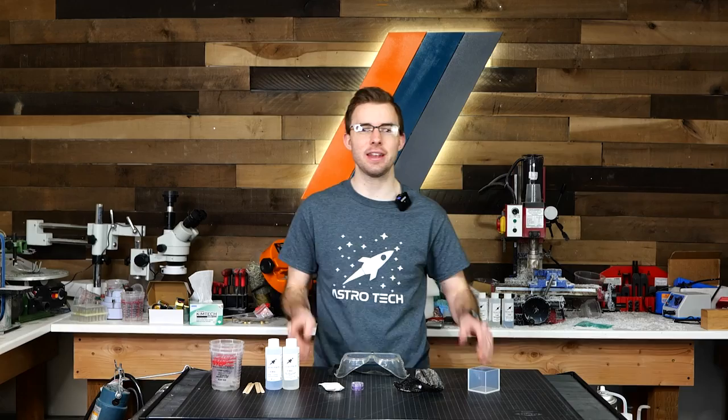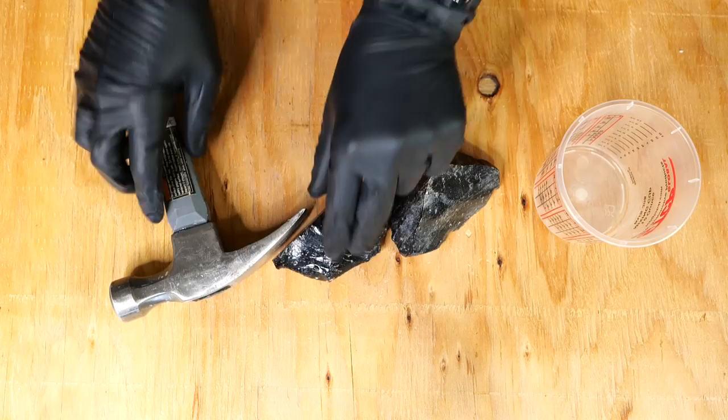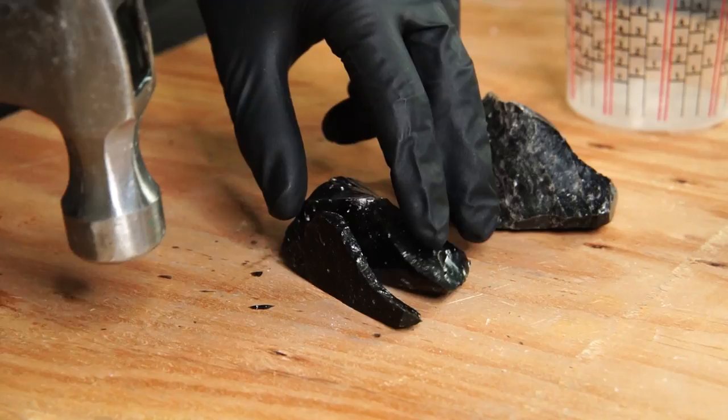All right, now I'll just use my hammer and I'm just going to be smashing off pieces of the obsidian. I'm wearing gloves because this can get sharp, I don't want to cut myself. I want the pieces to be small enough that they can definitely fit within the mold, so that's the size I'm aiming for.